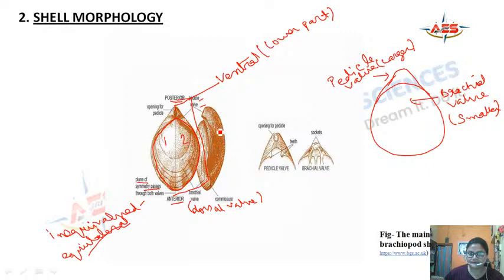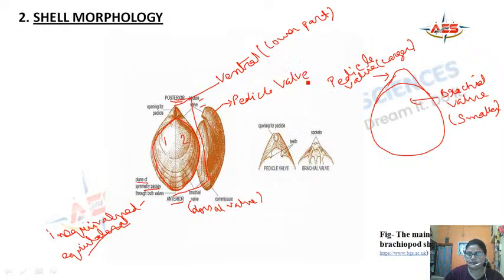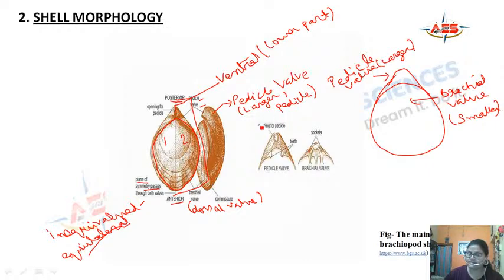The pedicle valve is present at the ventral side and is larger in size. It consists of a fleshy stalk-like body known as the pedicle. The brachial valve is the dorsal valve, present at the dorsal side of the organism.